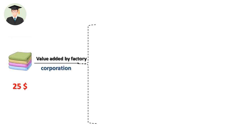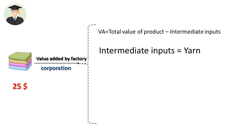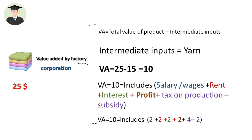Yarn is used as an intermediate input for producing clothes. To calculate the value added of this production, reduce the value of the intermediate inputs from the total value of production. The intermediate input is yarn. The total value of production is $25, intermediate input is $15, so value added is $10.